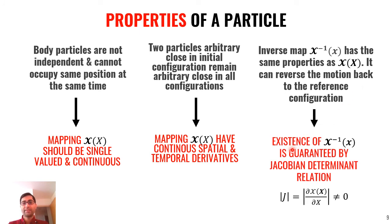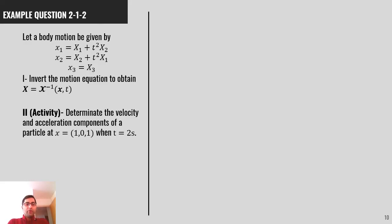So, the existence of this inverse map is guaranteed by Jacobian determinant relation. So, the Jacobian of the forward map should never be zero. So, we can define the inverse map.